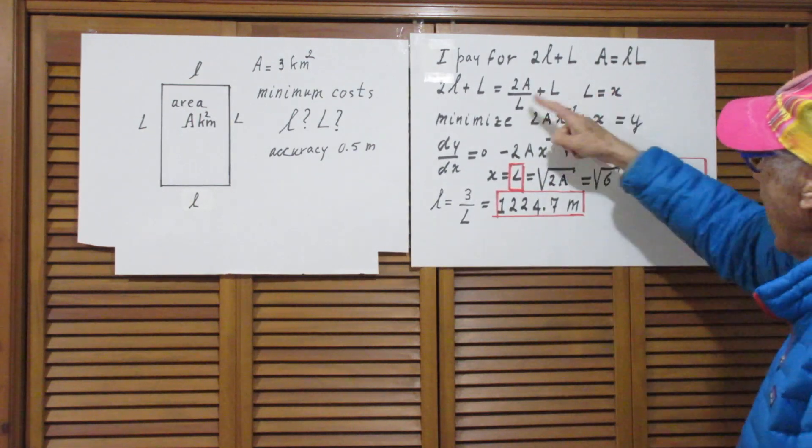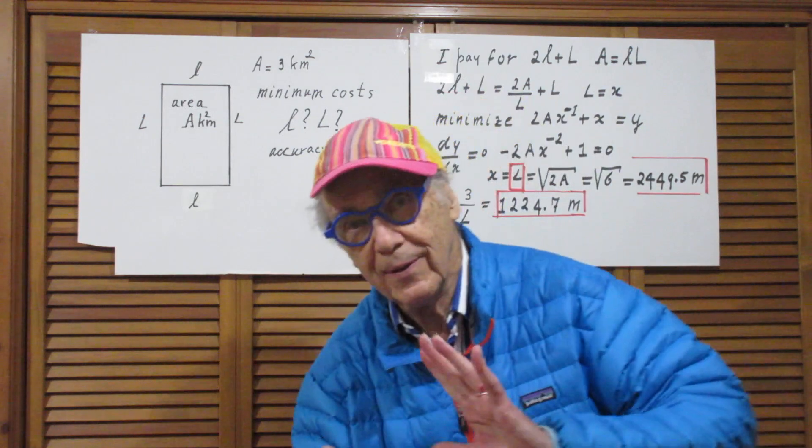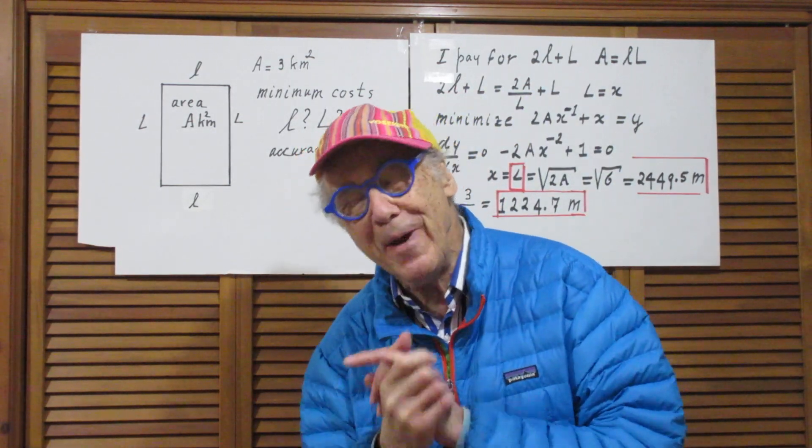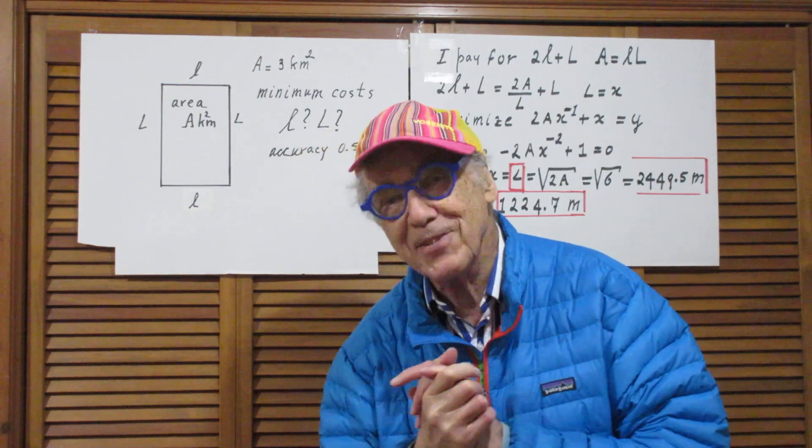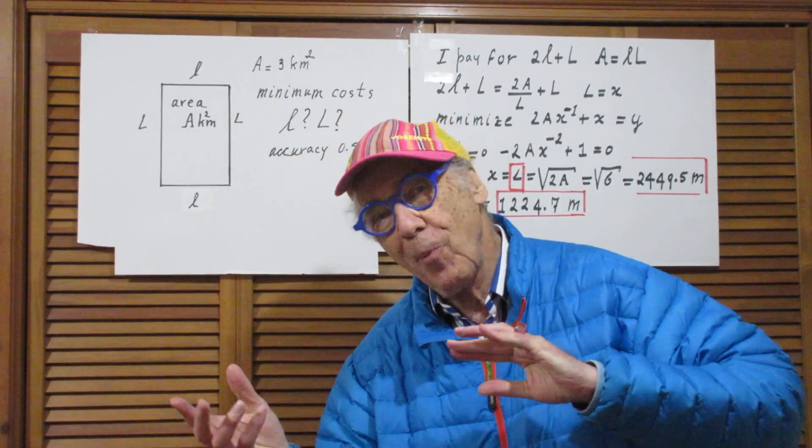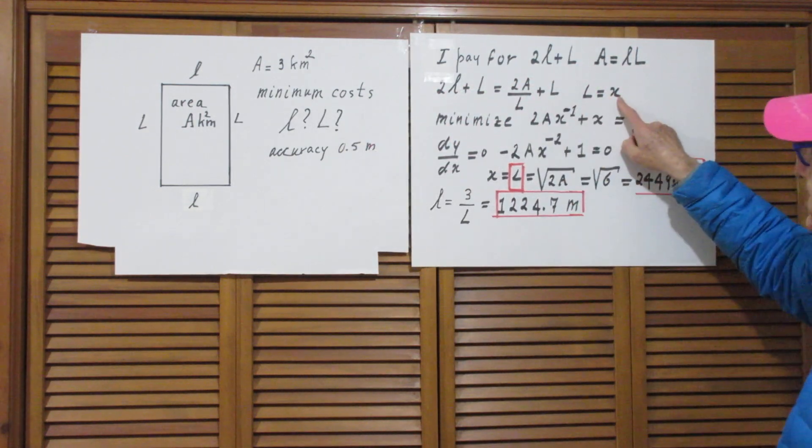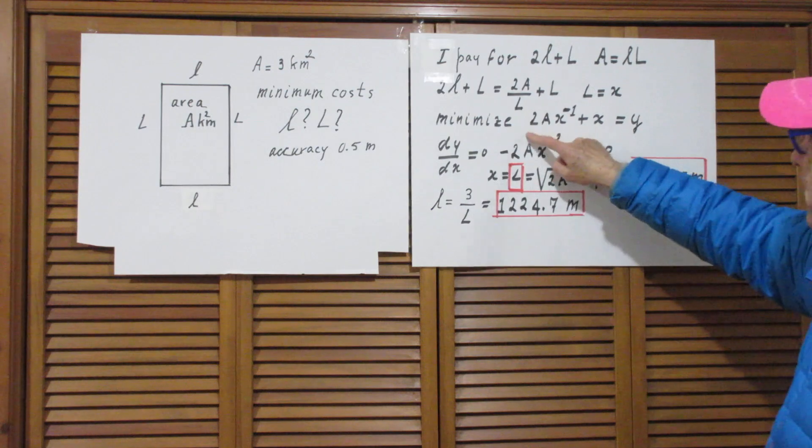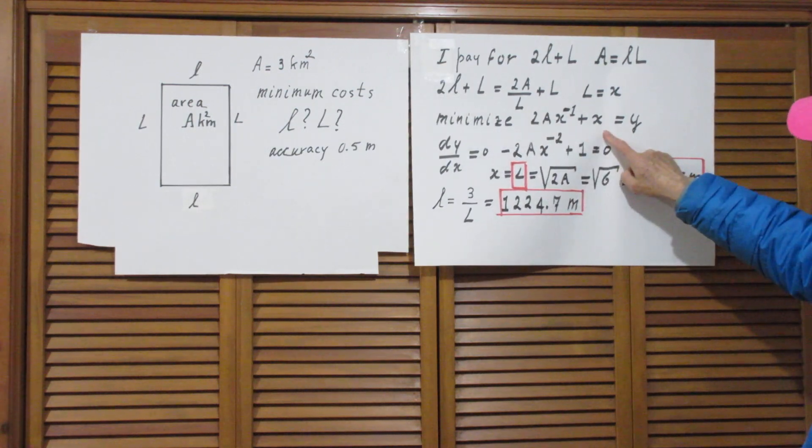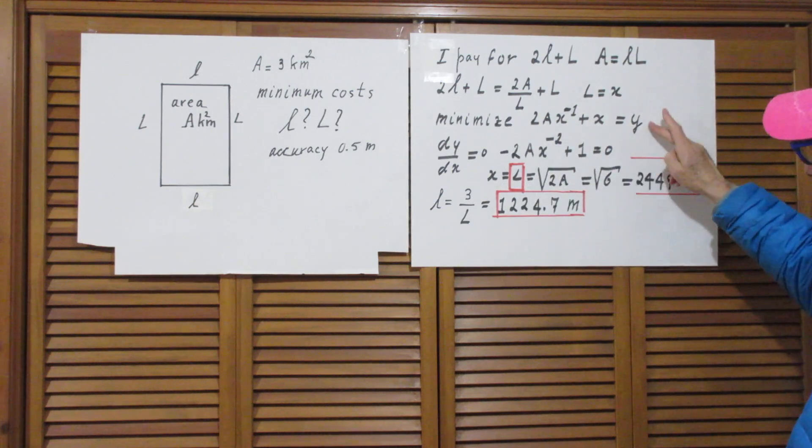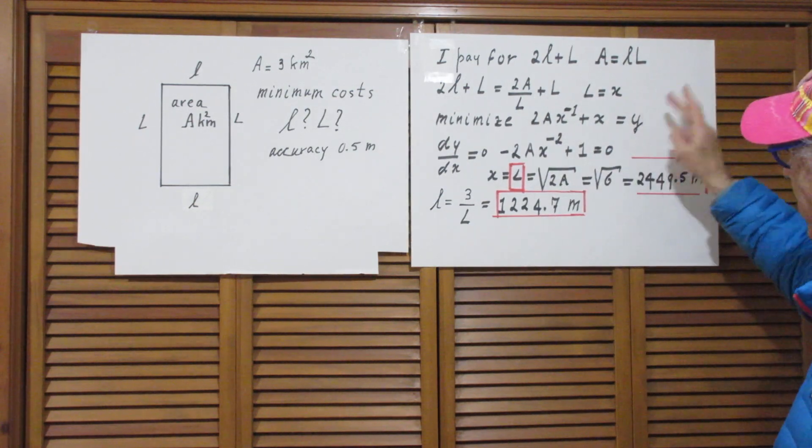We used to minimize things in high school when the variable is x and not capital L, so I will change the capital L to x. So I have to minimize this function: 2Ax^(-1) + x = y. And I minimize that by taking the first derivative dy/dx and making that equal to 0.